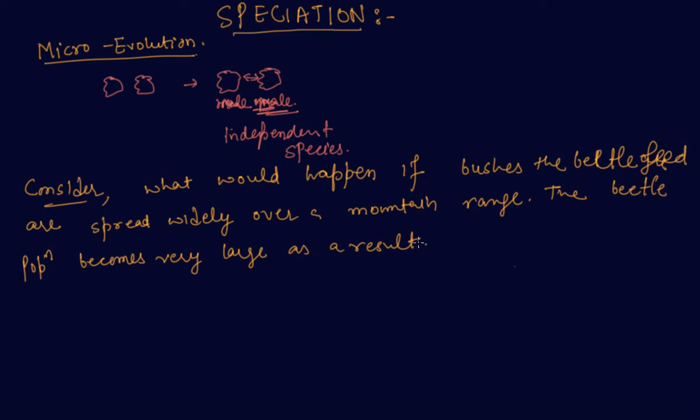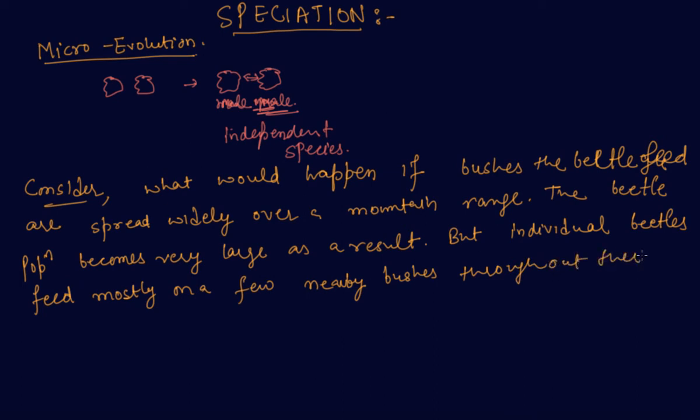But individual beetles feed mostly on a few nearby bushes. They do not travel far. So in this huge population of beetles, there will be subpopulations in the neighborhood. Since male and female beetles have to meet for reproduction to happen, most reproduction will be within this subpopulation.